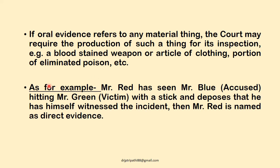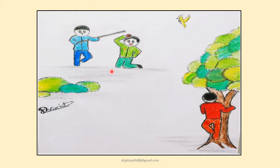For example, Mr. Red has seen Mr. Blue — the accused — hitting Mr. Green — the victim — with a stick, and deposes that he himself witnessed the incident. Then Mr. Red is named as a direct witness. In the illustration, Mr. Blue is hitting Mr. Green with a stick, while Mr. Red is standing behind a tree watching the incident. Mr. Blue is the accused, Mr. Green is the victim, and Mr. Red is the eyewitness. When Mr. Red appears in court and gives his evidence, this type of evidence is called direct oral evidence.